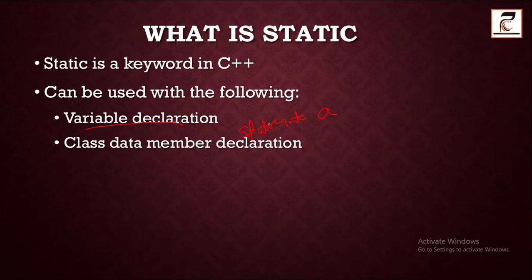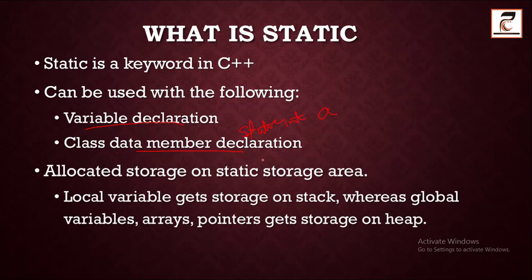Similarly, class data members — whether member variables or member functions — can also be declared as static. When variables are declared static, they get storage in the static storage area, which is different from the stack and heap storage areas. Stack, heap, and static memory are the three parts of your memory region.